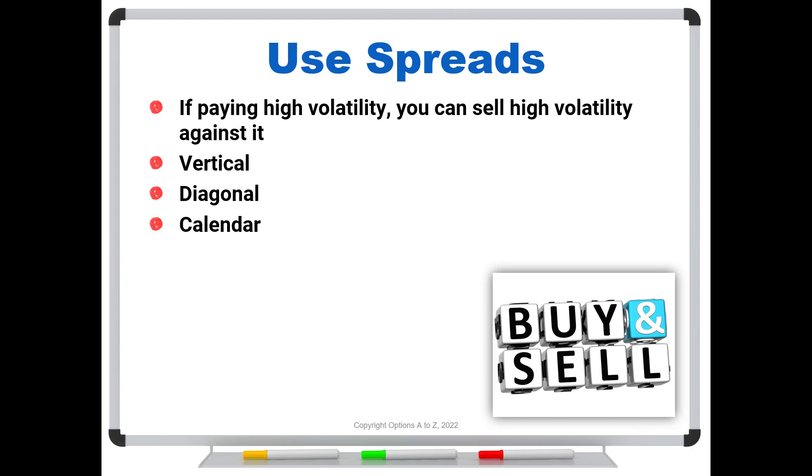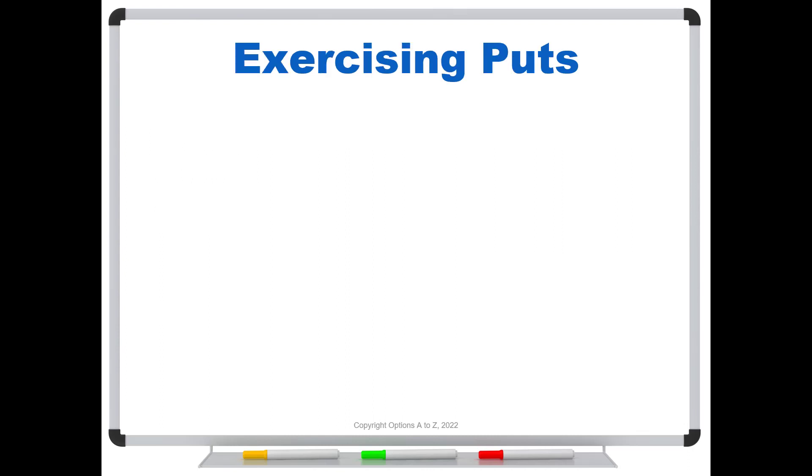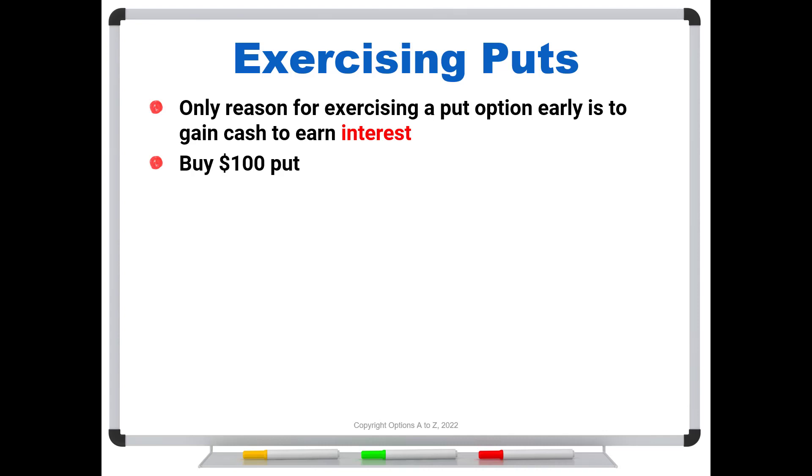But what about part two of the question? What about exercising your puts? Well, the only reason for exercising a put option early is to gain cash to earn interest. And even then, you want to make sure that that put option has very little and preferably no extrinsic value. So that means it would have to be deep in the money. Let's say that you buy a hundred dollar put, doesn't even matter what you paid for it, but now the stock is trading at 80. So this put's 20 bucks in the money, and you look at this on your broker's platform and it's trading for exactly 20 bucks, which means there's no extrinsic value, or maybe very little. It's trading for $20.10.